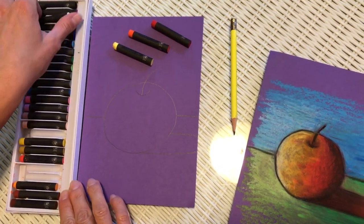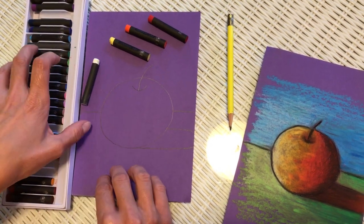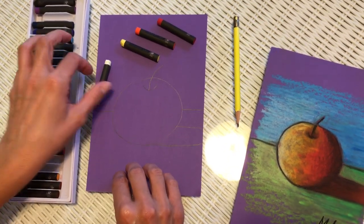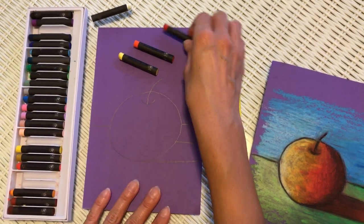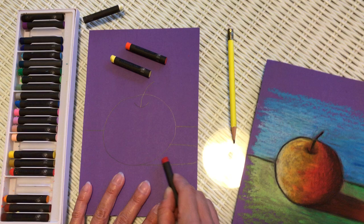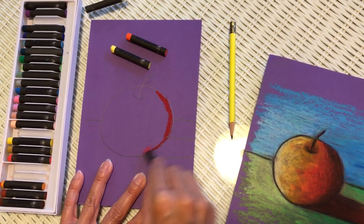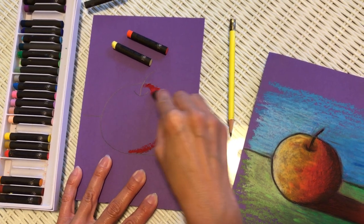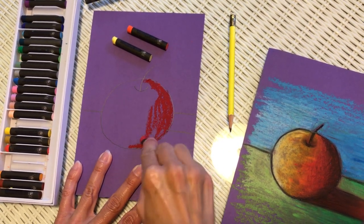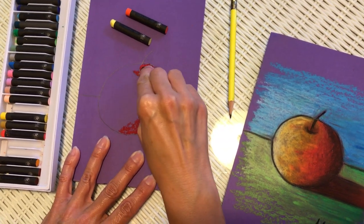Then we use white, white is always very good to use with the oil pastel because it provides highlights to our picture. So we'll start with the dark color on the side where the shadow is. So we're going to apply the color, like that.